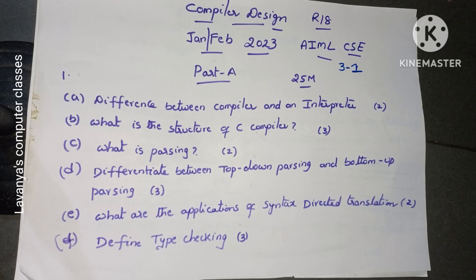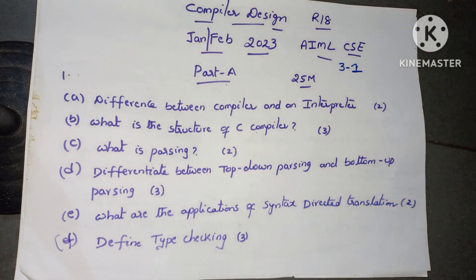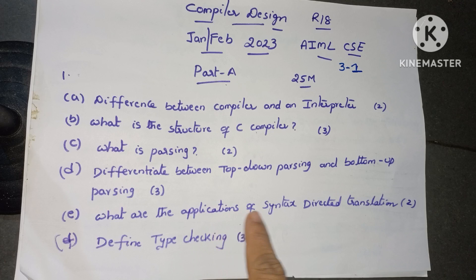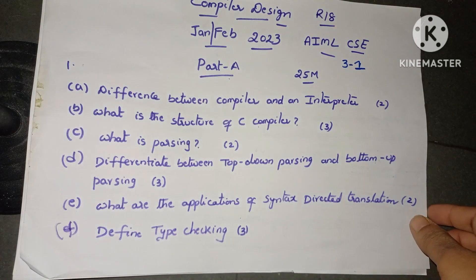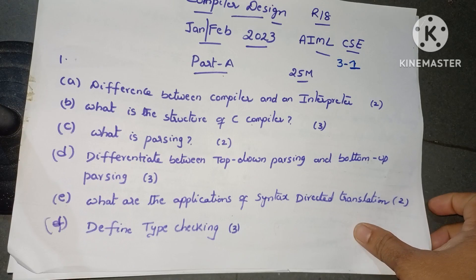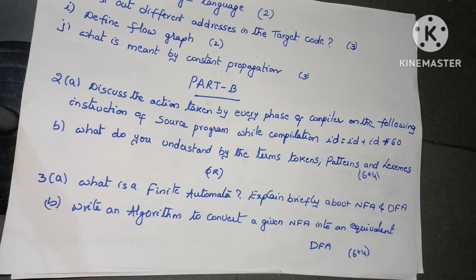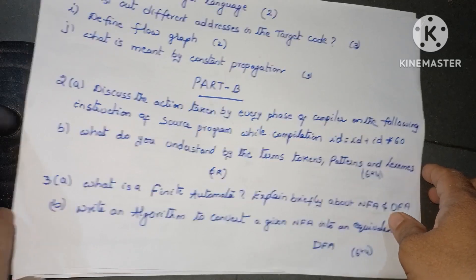Part A is 25 marks questions. A bit: difference between compiler and interpreter, 2 marks. B bit: what is the structure of a C compiler, 3 marks. C: what is parsing, 2 marks. D bit: differentiate between top-down parsing and bottom-up parsing, 3 marks. E bit: what are the applications of syntax directed translation, 2 marks. F bit: define type checking, 3 marks. G bit: what is target language, 2 marks.